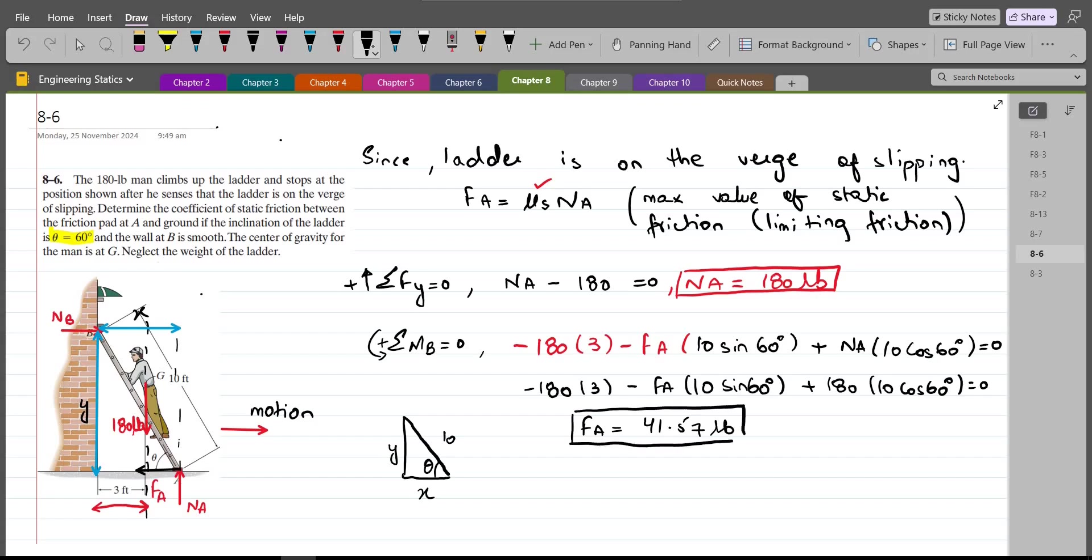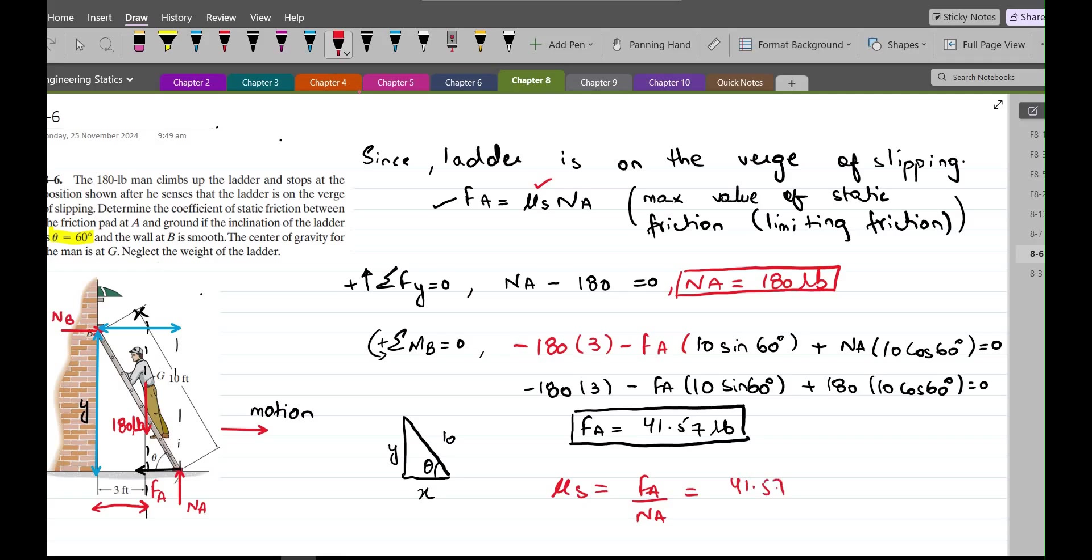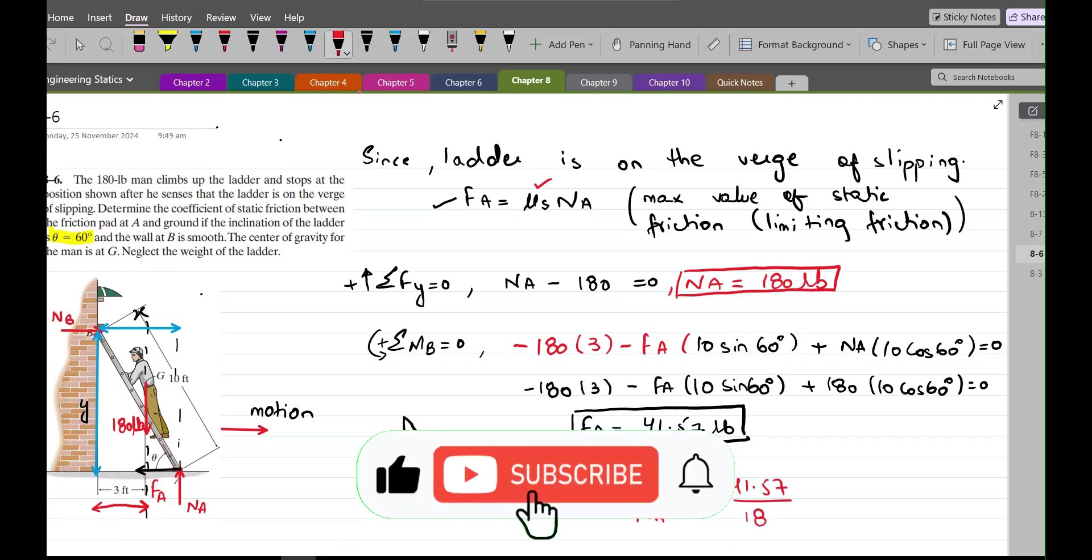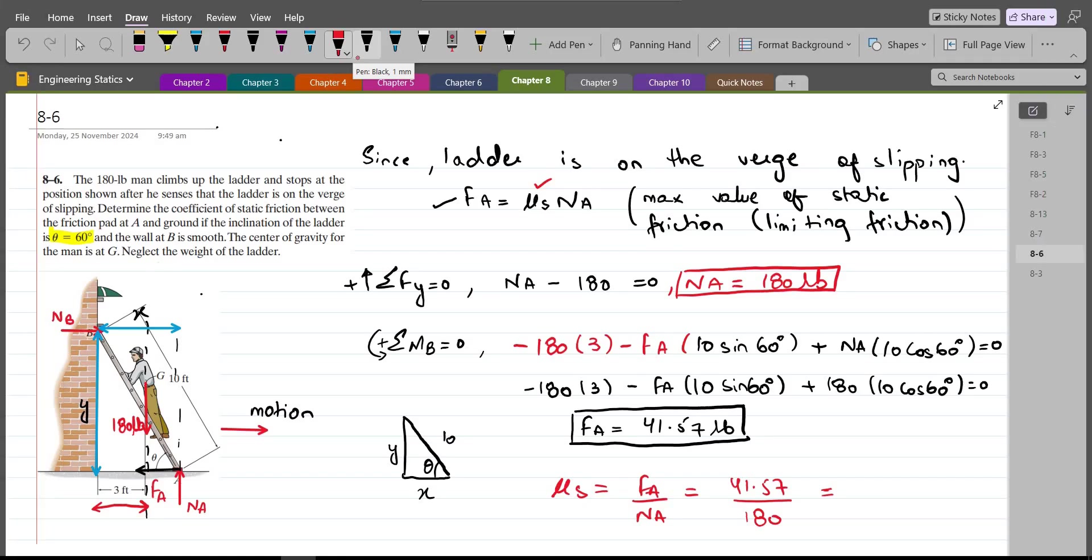And now we can use this equation to find the value of the coefficient of static friction. The coefficient of static friction is FA upon NA. So 41.57 divided by 180, so the coefficient of static friction comes out to be 0.231. So this is our answer.